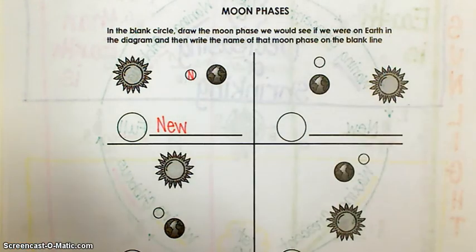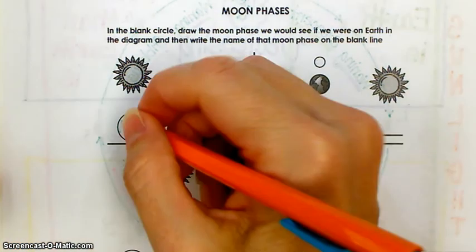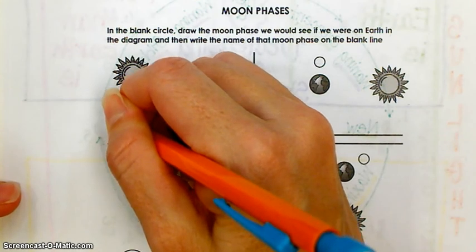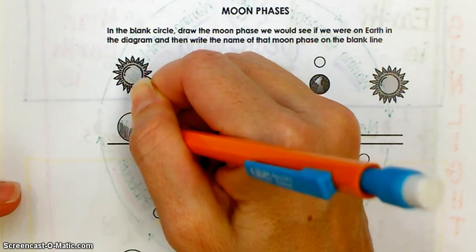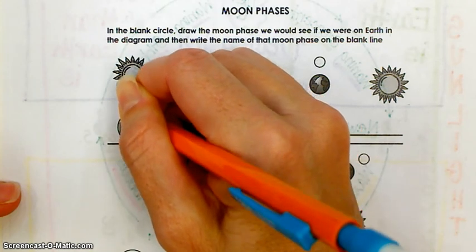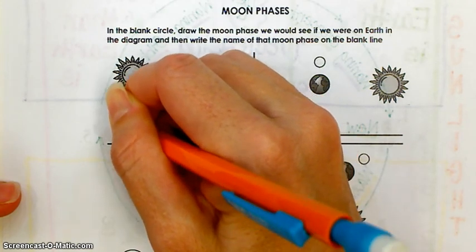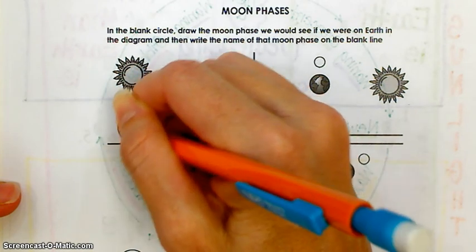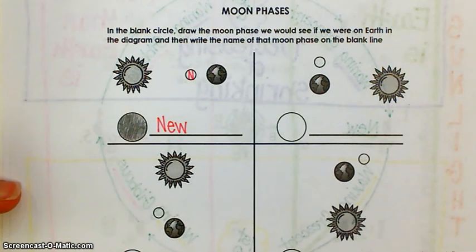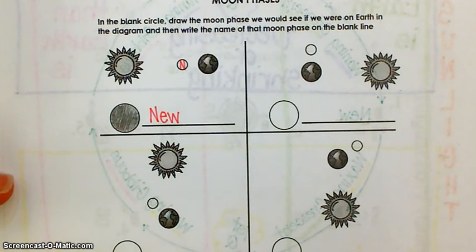And what am I going to do on the diagram? On the little thing for shading. How much of it is going to get shaded in? The whole thing because the side that's facing us is dark. Now, here's the trick for the rest of them because they change the orientation of the picture. But if you can remember, new moon is always in between the earth and the sun, then that's what I want you to do.